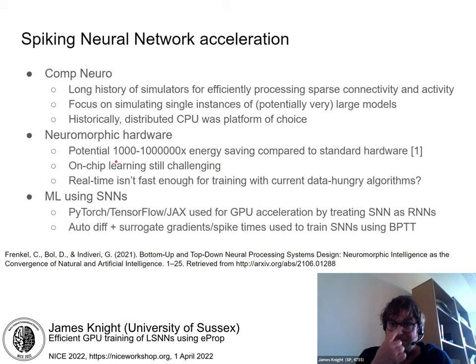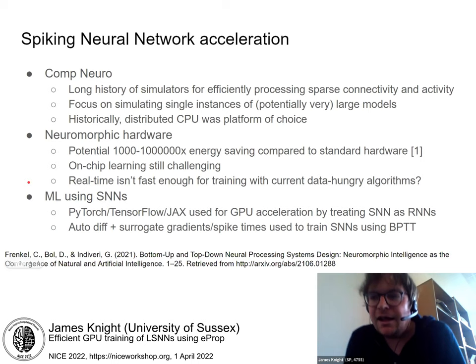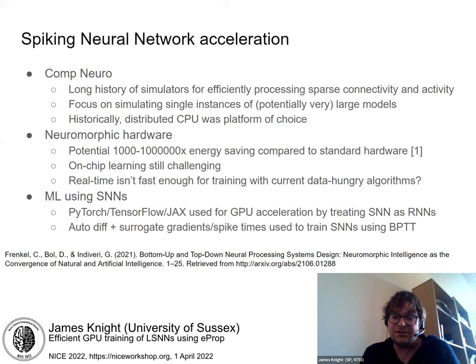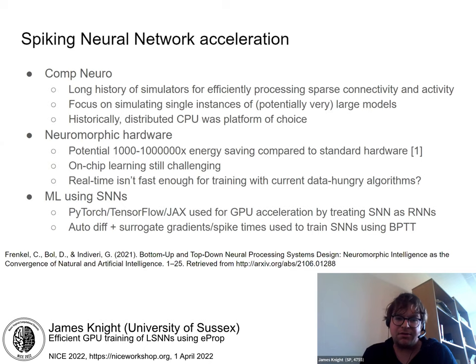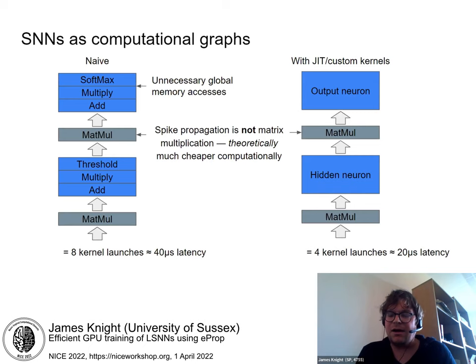Because of this, people have started applying standard machine learning tools like PyTorch, TensorFlow, and JAX to GPU-accelerate spiking neural network research. In this approach, people tend to treat an SNN as a recurrent neural network with binary activations. These tools are useful because you can add surrogate gradients or use spike times from the output layer and then use differentiation to train the SNNs using backprop through time.